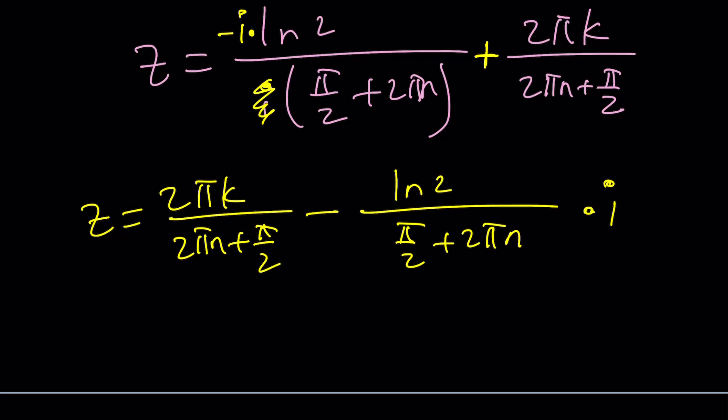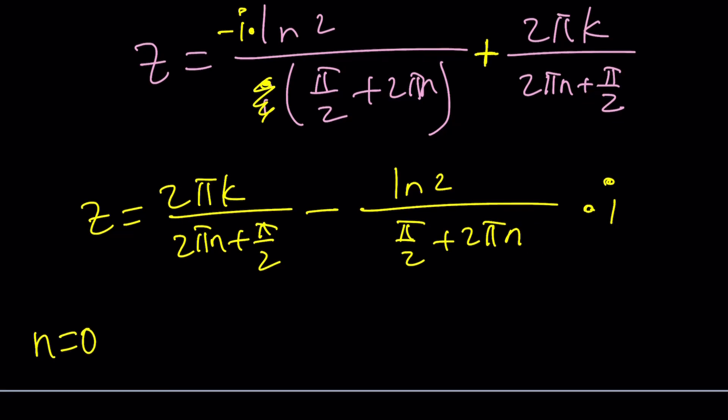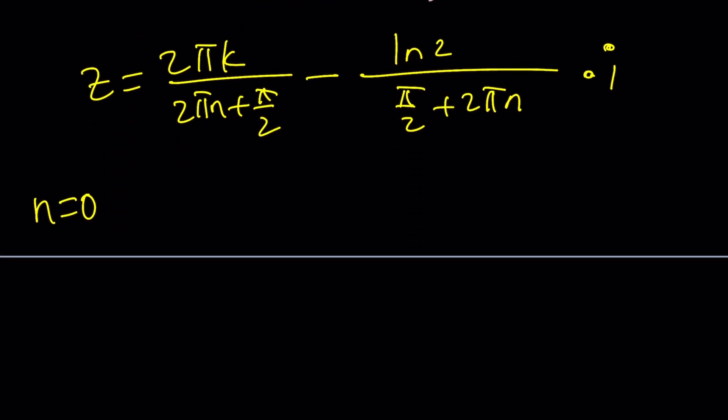If n is equal to 0, we're going to get a π over 2 from here. π's are going to cancel out. And we're going to get 4k for Z. And then minus ln 2 divided by π over 2 plus 2πn. But I already said n equals 0. So, it's just going to be like that.